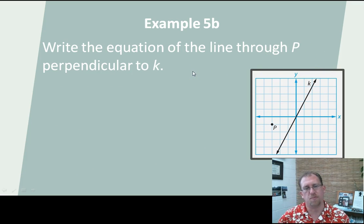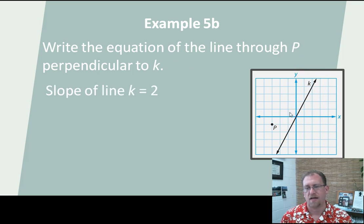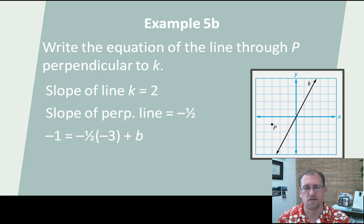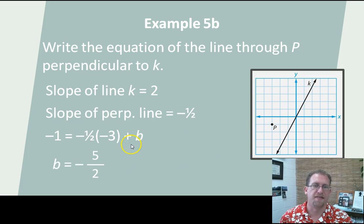Write the equation of the line through P perpendicular to k. Same thing. Now I look at the line k and say it's got a slope of 2. But what would be the perpendicular line through that? Well, the perpendicular line would have a slope of -1/2. So the slope of the line I'm looking for is -1/2. Plug in the x and y values from point P, and I can solve for b again. I find this time b has a value of -5/2. And so I can write my standard slope-intercept form: y = -1/2x - 5/2.